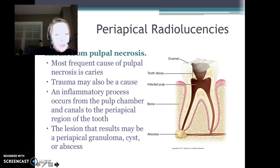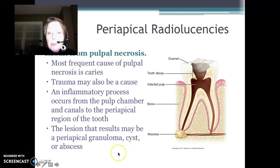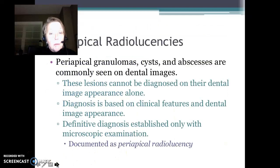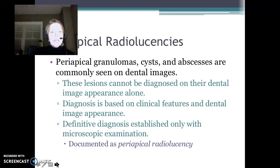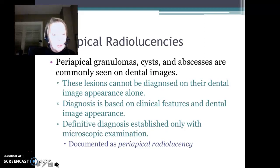Pulpal necrosis is an inflammatory process, and it starts to occur in the pulp chamber and travels down the pulp canal to the apical or periapical region of the tooth. We're going to look at a periapical granuloma, a periapical cyst, or a periapical abscess. These are very commonly seen on dental images, but looking at the image, whether it's a granuloma, cyst, or abscess, we can't diagnose them on their appearance alone. We're going to call them periapical radiolucencies — we would need microscopic examination to determine what kind of cells are present.